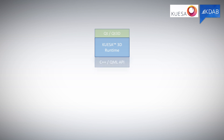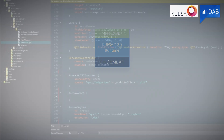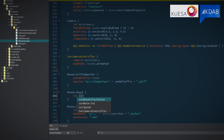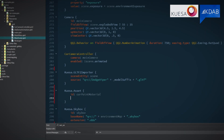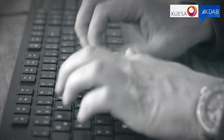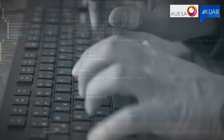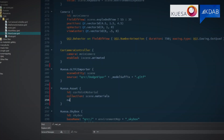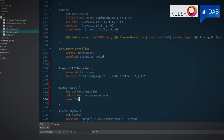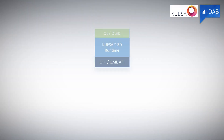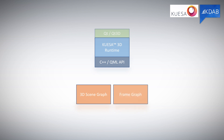Quesa 3D provides a high-level C++ QML API, which makes it easy to get the first application running. Developers get full control over the 3D scene description, the scene graph, and render specifications, the frame graph.